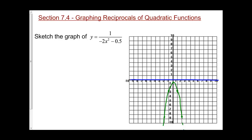When I draw my reciprocal function, I'm still going to have my invariant points, which go through at y equals negative 1. I don't have any invariant points at positive 1, so I need one more point — the vertex. My original vertex was negative one half, so the reciprocal of that is negative 1 over one half, which is negative 2. So my vertex is at negative 2.